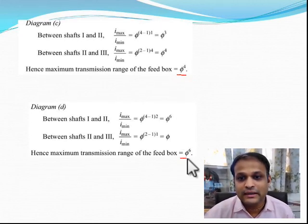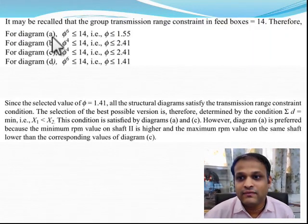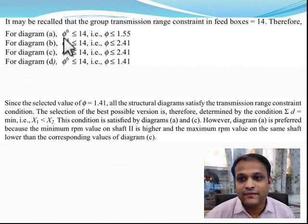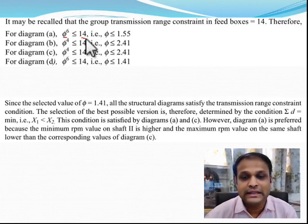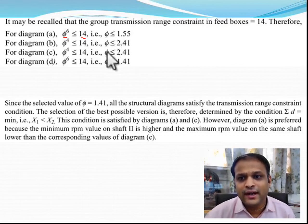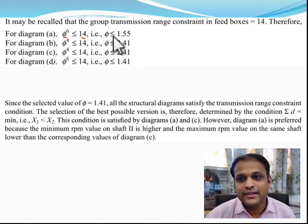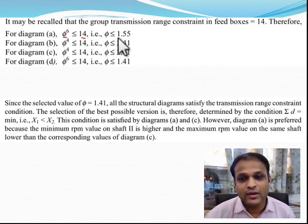We applied the inequality that phi raised to 6 should be less than 14, which is the range ratio for a feed box, and we found that all phi values were admissible because all were actually less than 1.41.